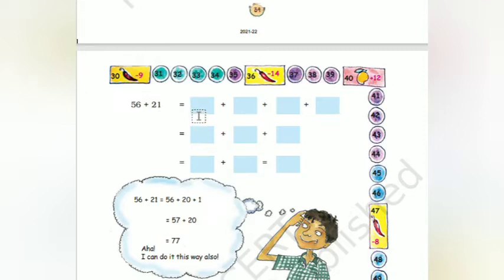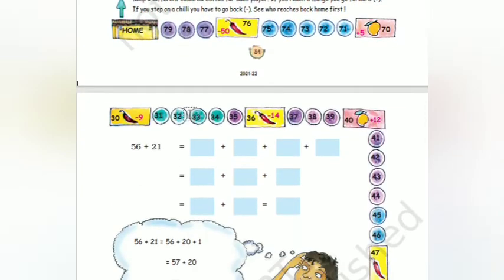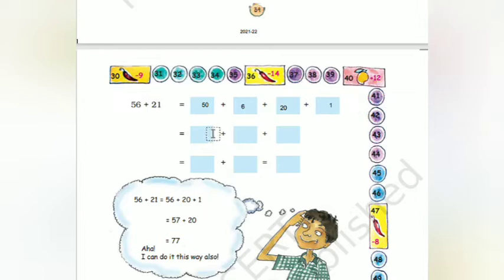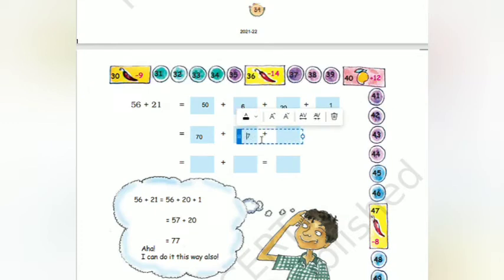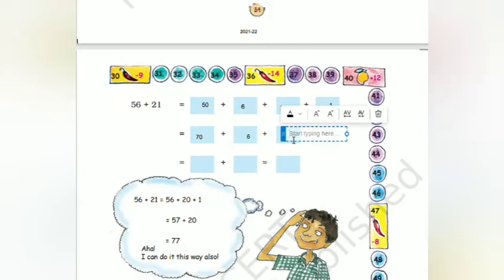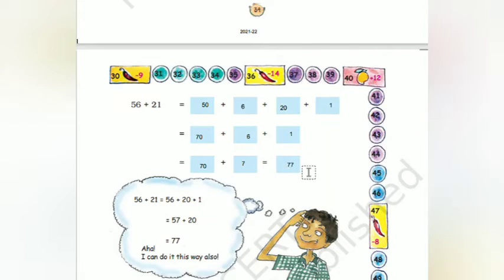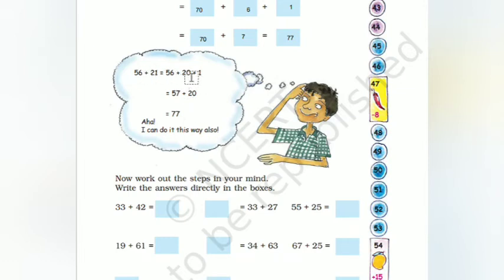56 plus 21: the previous method we are doing here also. 56 can be written as 50 and 6, 21 can be written as 20 and 1. So 50 plus 20 gives 70, then 6 plus 1 gives 7. Writing separately: 6 and 1, then 70, so the answer is 77. This can also be written as: 56 plus 21 equals 56 plus 20 plus 1, that is 57 plus 20 gives 77.